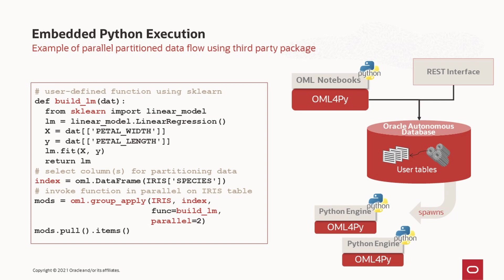Embedded Python execution facilitates production deployment of user-defined Python functions. Here we show using the Python API for running a user-defined Python function in parallel that builds a scikit-learn linear model and returns that model. In this example, our goal is to build one model for each species in the iris dataset. Using the group apply function, it takes a proxy object — in this case the iris proxy object — and the index column we wish to partition the data on, in this case the species column. We pass in the user-defined function and the number of Python engines we want to spawn to run this function. User-defined functions can be stored by name in the Python script repository in the database, and this same name is used when invoking such functions through the REST API or granting access privileges to other users.